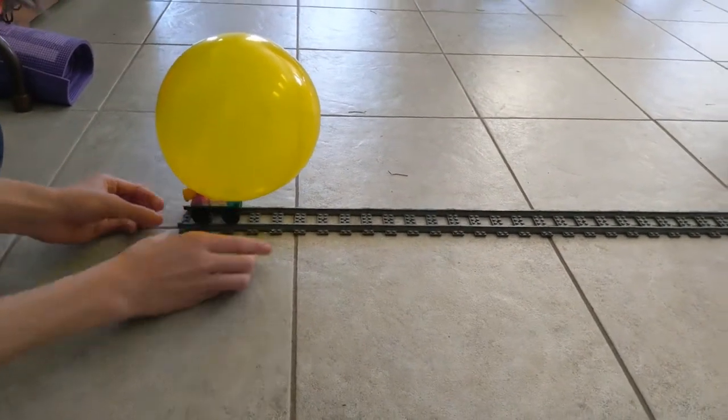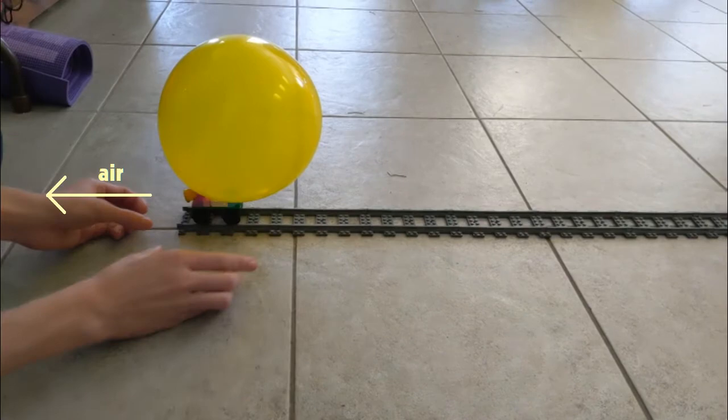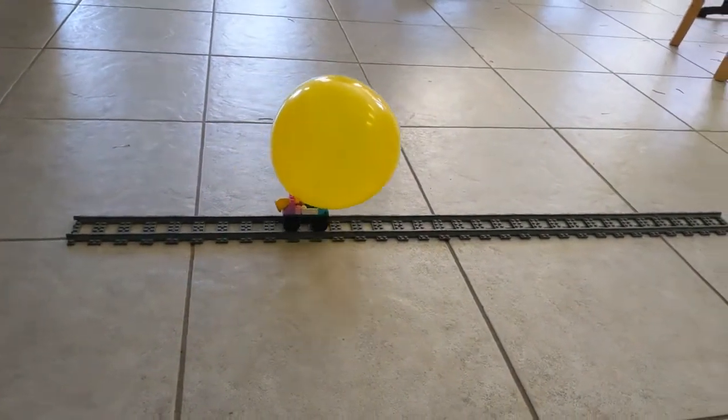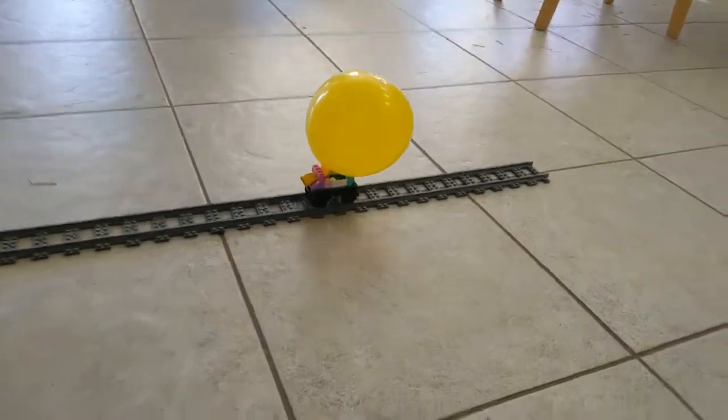I'm going to demonstrate how this works with a Lego train car and a balloon. What do you think will happen when we let the air out of the balloon? There's only one way for it to go, that's out the back. And so that air going out the back will push the train forward.